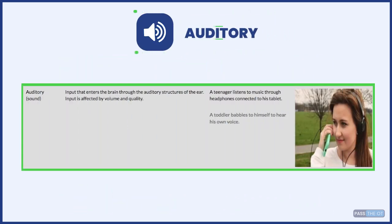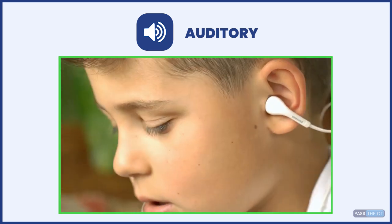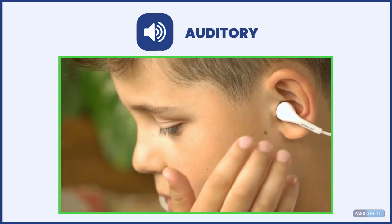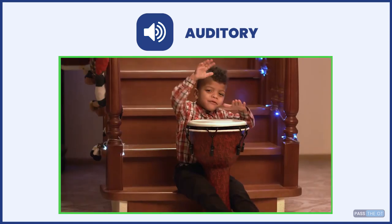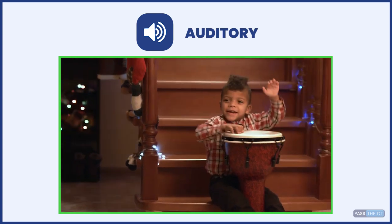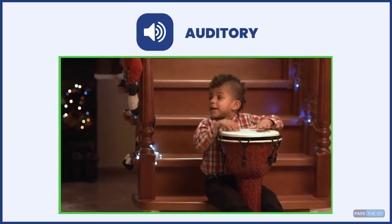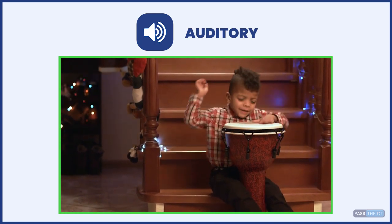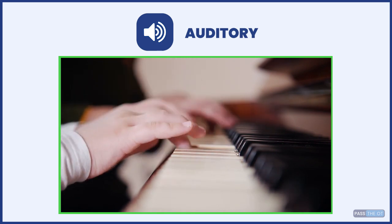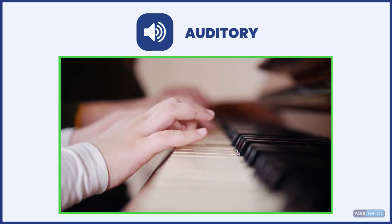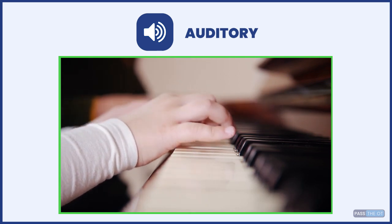In regards to auditory stimuli, as you can see in this photo, this teenager is listening to music through her headphones. Auditory stimulation could be a toddler babbling, a conversation, someone's favorite music — especially useful for traumatic brain injury patients to help them recall memories. Input enters the brain through auditory structures of the ear and is affected by volume and quality.